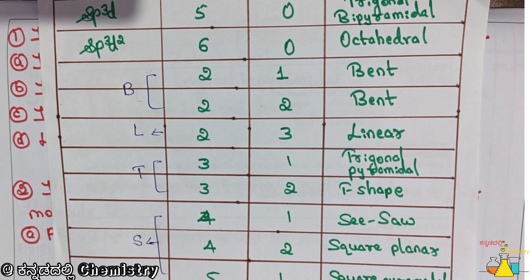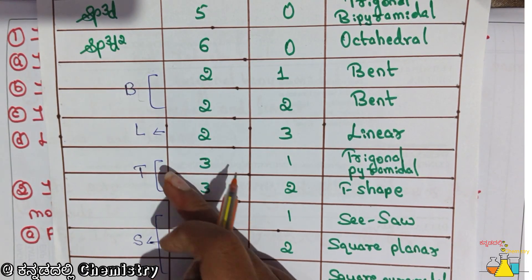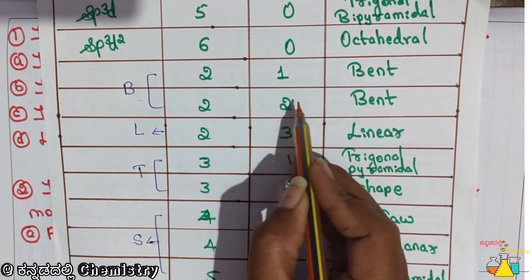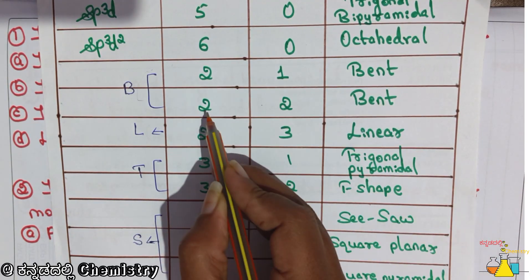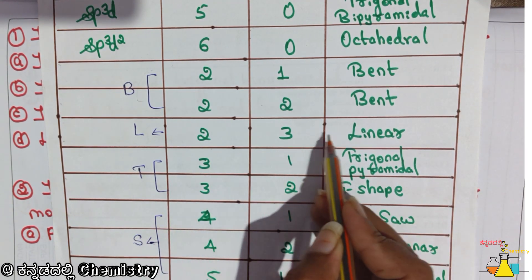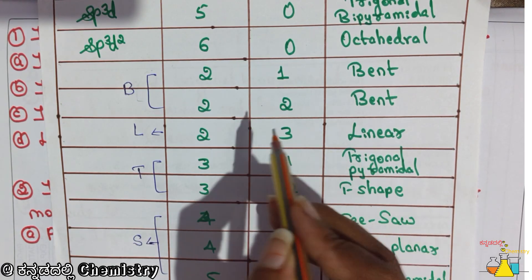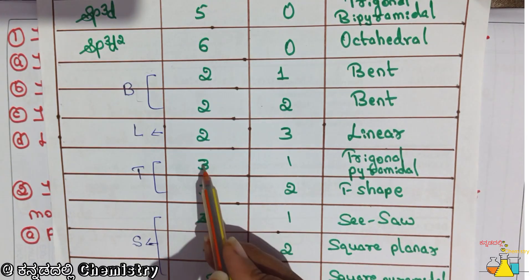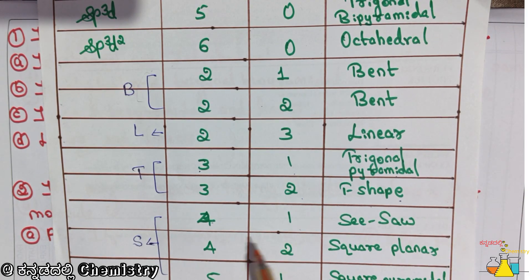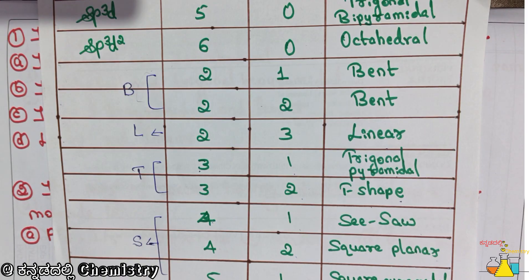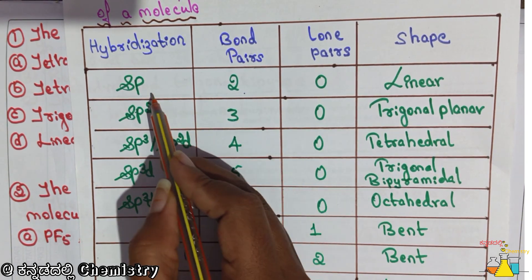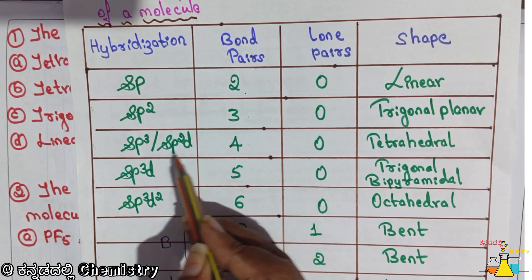The mnemonic is: Boomi kaa luggage aid koanndu travel maathiddu scooter alii. So B is 21 and 22 — 2 bond pairs and 1 lone pair, and 2 bond pairs and 2 lone pairs — the case is bent. Linear shape is made in the 23 case: 2 bond pairs and 3 lone pairs — linear shape. Also 2 bond pairs and 0 lone pairs is linear shape.